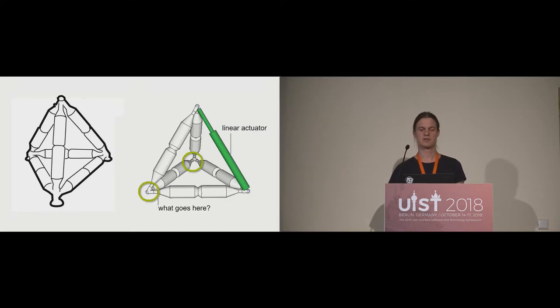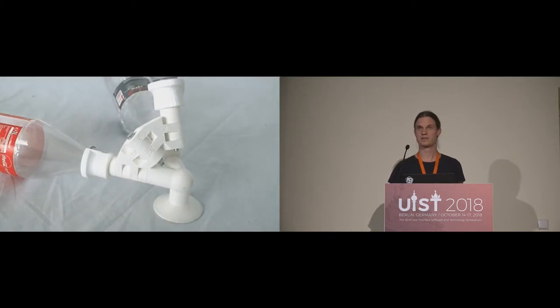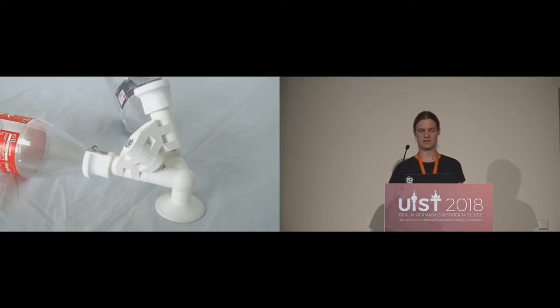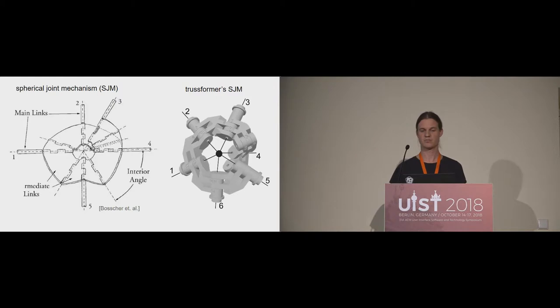However, the less intuitive question for us was what to put at these points, at the node points, which now need to hinge around. In the simulation, it's easy. They are simulated as ball joints, and they just work fine. However, in physical reality, they cannot be produced as ball joints, because they're just connecting multiple edges at the same point, and that's physically impossible. This is how it looks like in our rendition. It's a bit more complicated than just a simple hinge. We took on this concept of spherical joint mechanisms from Boscher et al. They came up with this special design where multiple axes can be connected around the same point, and they offer kind of the same functionality as ball joints, with somewhat limited range of motion, but it's still perfectly fine for our structures.